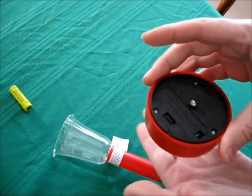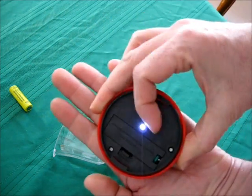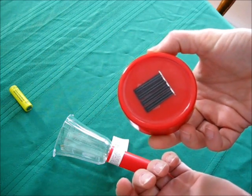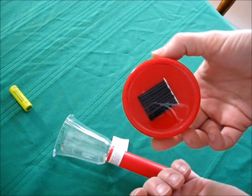Now, of course, if you cover the solar cell, the light comes on. If it gets dark out at night, the light will come on.